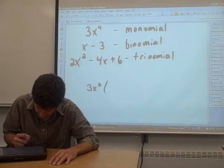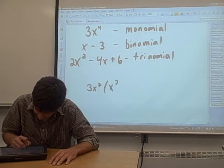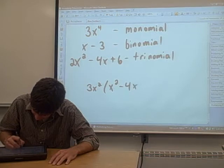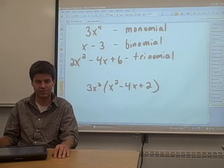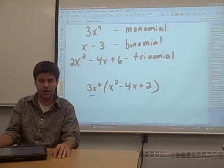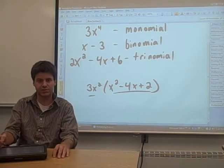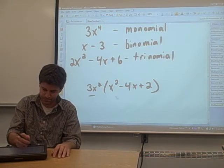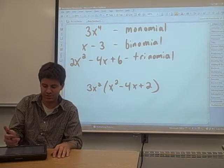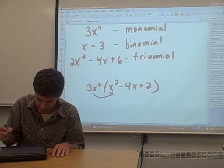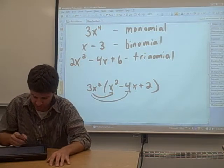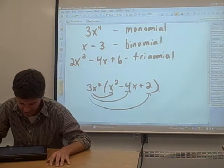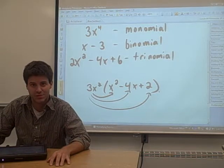Say you have 3x squared times x squared minus 4x plus 2. You have something like that. You'd like to multiply this monomial with this trinomial. The way that you do this is just distributing. You multiply the 3x squared times the x squared term, you multiply the 3x squared times the negative 4x term, and the 3x squared times the 2.